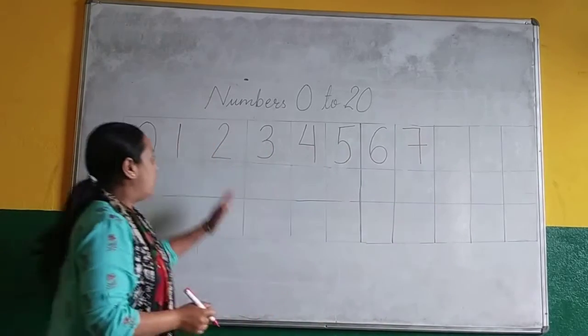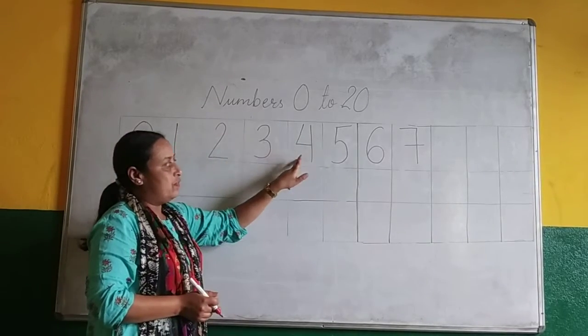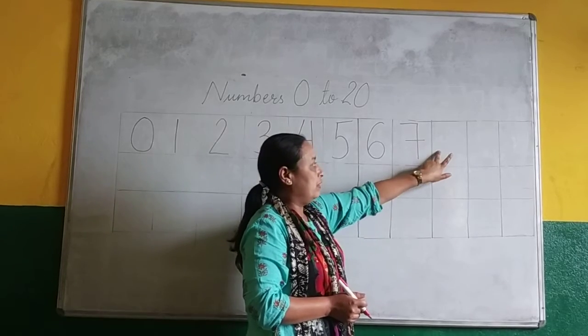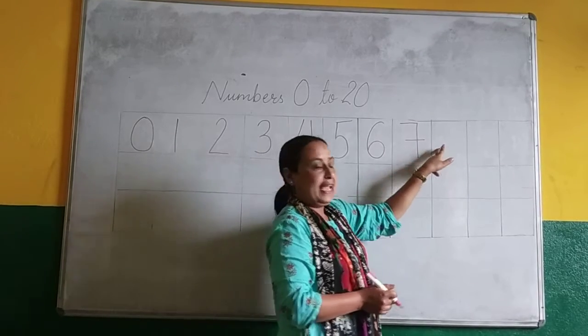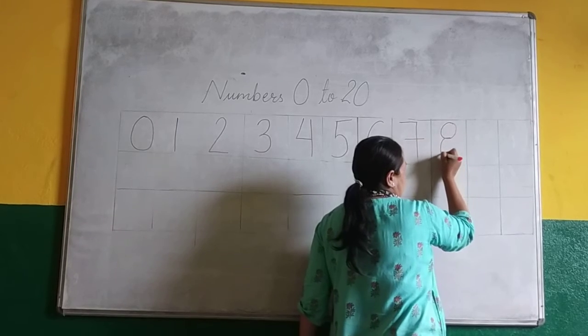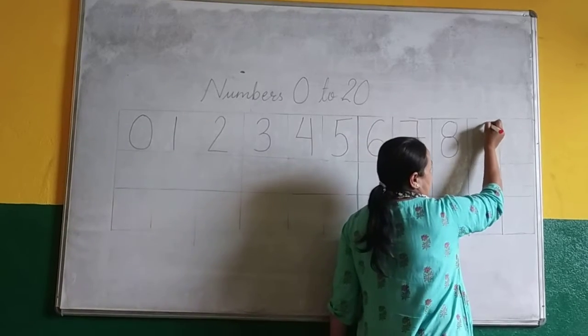Then you have to write down number 7. Again you count from 0. Understood? 0, 1, 2, 3, 4, 5, 6, 7. What do you have to write here? Number 8. Write like this. 8. 8. 6, 7, 8. Then 9.